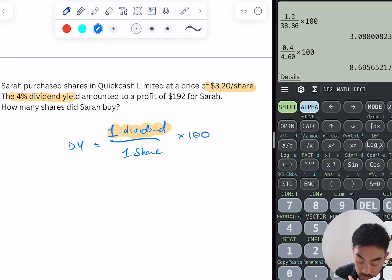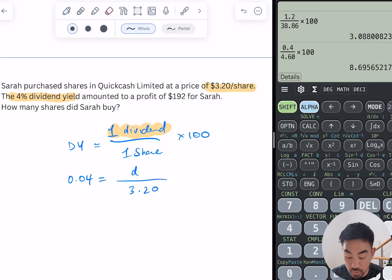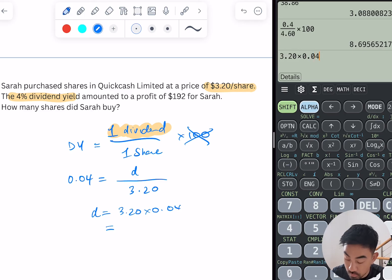Okay, so the dividend yield is 0.04 as a decimal. Let's just call the dividend D over one share, which is $3.20. Okay, I can leave out that times 100 here because I've already converted 4% into a decimal. So to find D, I need to multiply 3.20 by 0.04, so that gives me 0.128.